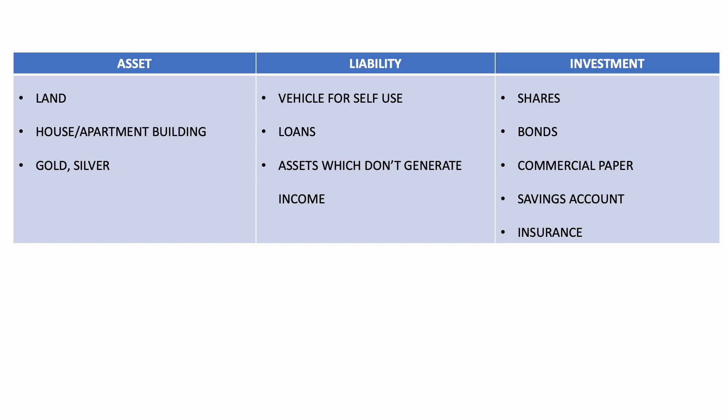Assets which don't generate income are known as liabilities. For example, a house — there is an argument that if you don't give a house for rent but stay in that house, the house becomes a liability because you have to repair it every now and then and there is no generational income. So a house where you are staying, if it's not generating any income, is going to be known as a liability.